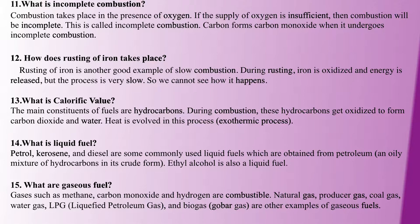Slow combustion produces low heat and light. For example, when food is oxidized in the human body and energy is released, that is an example of slow combustion. The equation is: carbohydrates plus oxygen react to form carbon dioxide plus water plus heat energy.